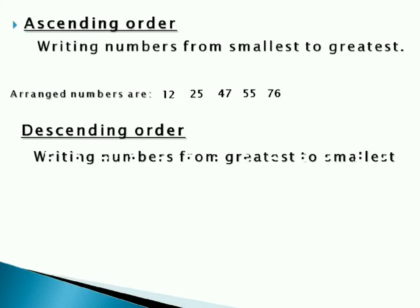Next one is descending order. It's completely opposite to ascending order. Here we write numbers from greatest to smallest. Let's try. First number will be 76, then 55, 47, 25, and the last is 12. Here we have arranged numbers in ascending order and descending order. These are the basic concepts of numbers.